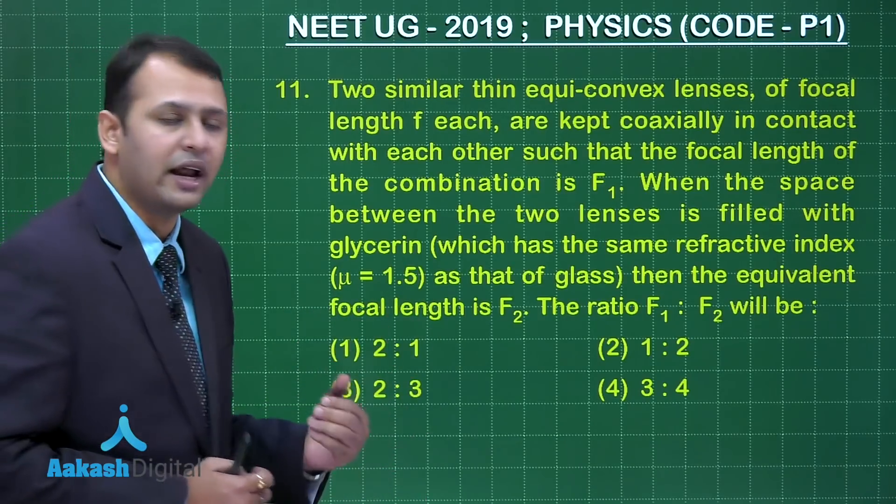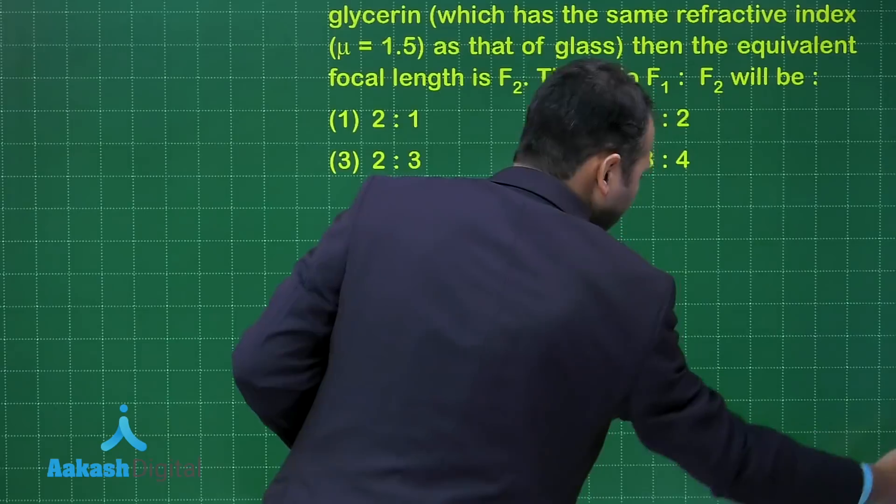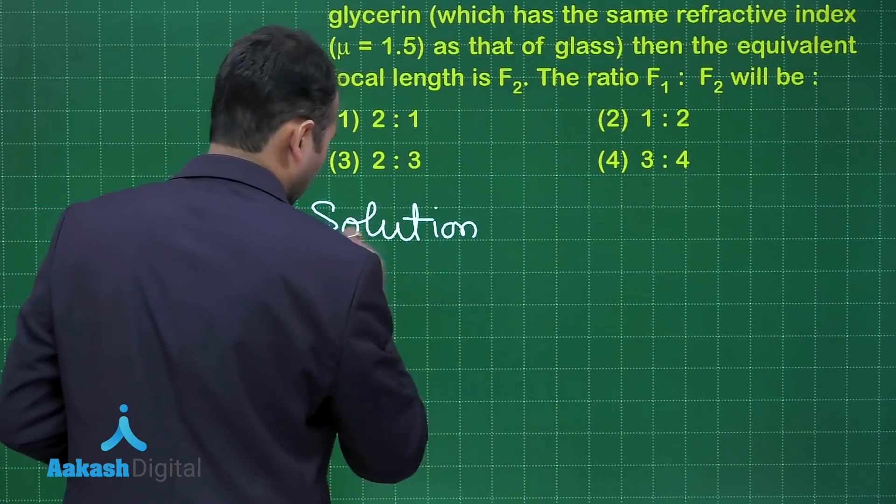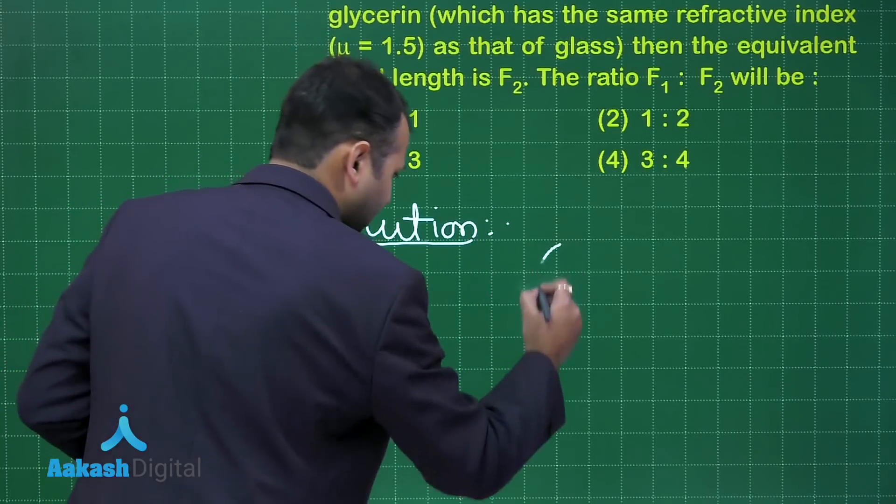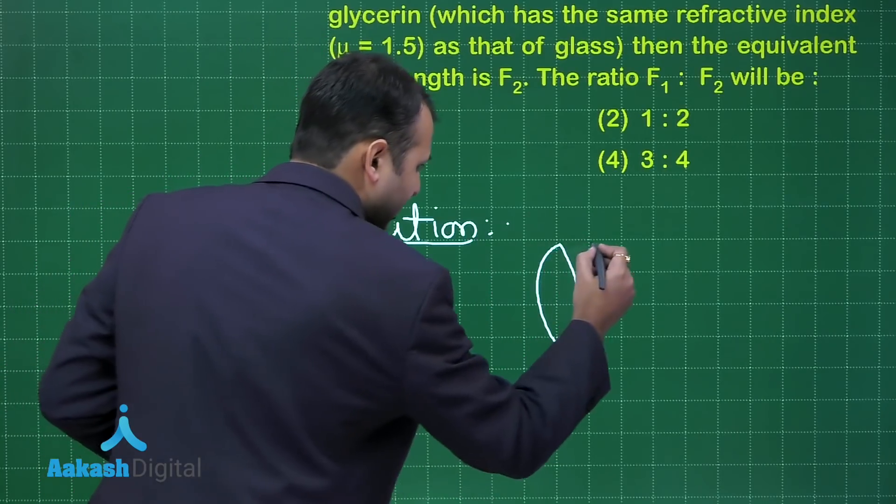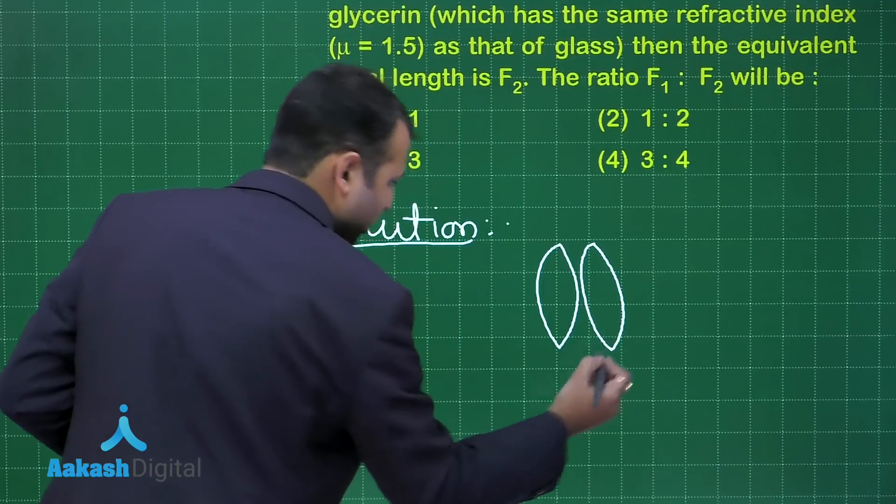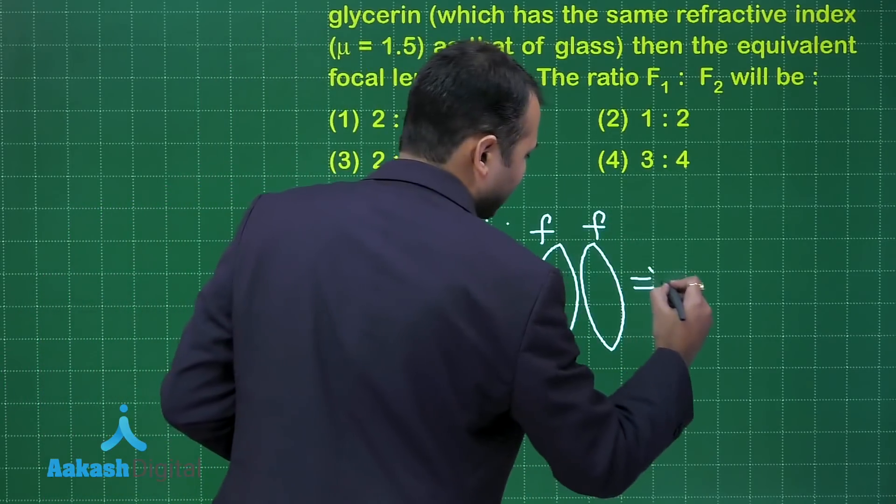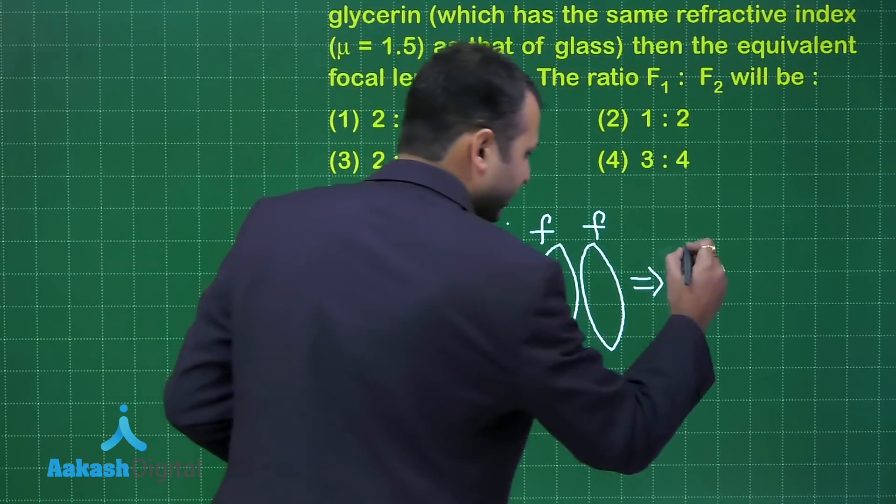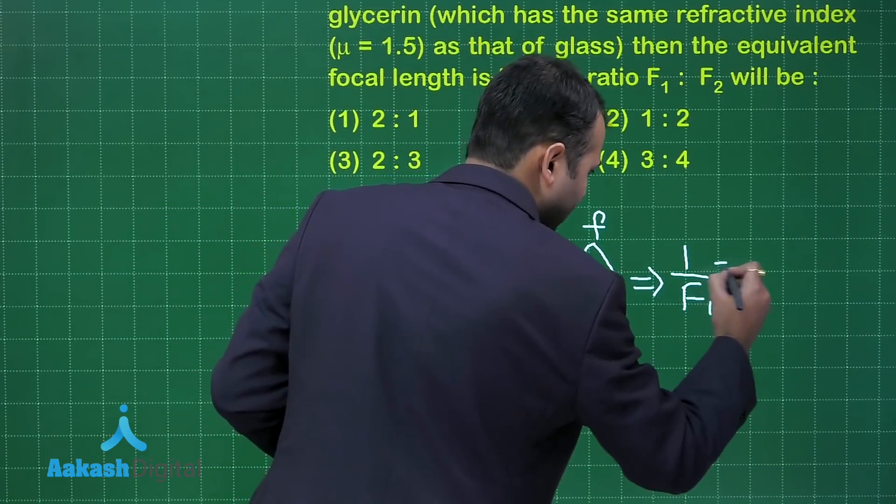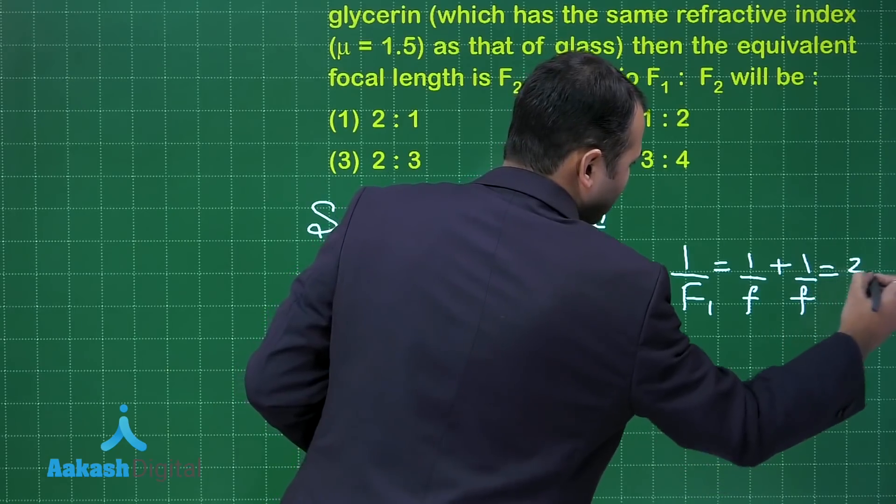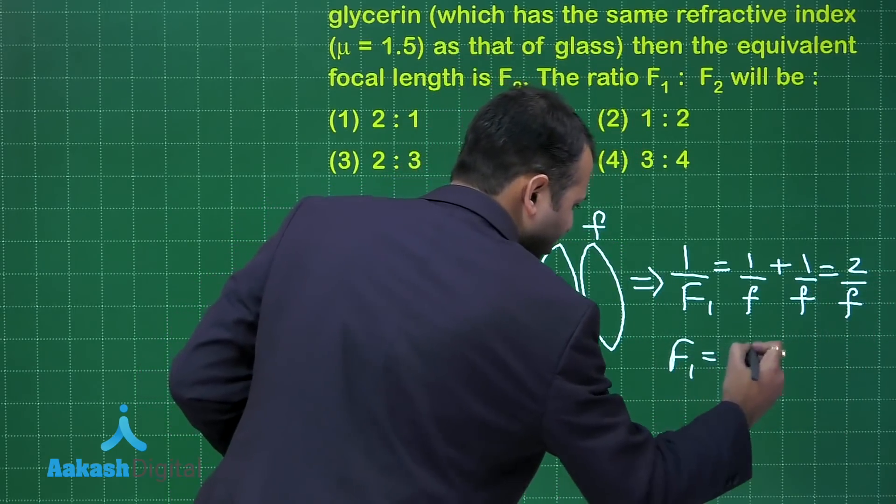Pretty simple question, just stick to the basic part. So if you take the example, let's take these as the lenses we are talking about. Focal length of both is small f, and the combination is giving a focal length of capital F₁. So I will write 1/F₁ equals 1/f plus 1/f, that makes it 2/f, or I will write F₁ equals f/2. That's the first observation.